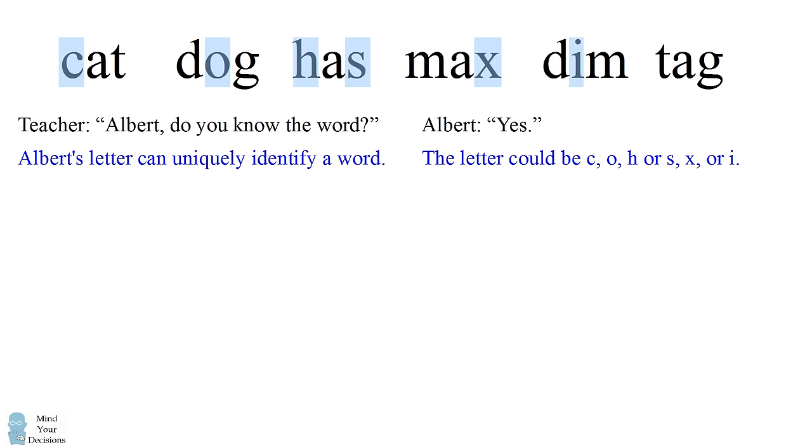Notice in the word tag, the letters T, A, and G all appear multiple times in this list. So since Albert replied that he could identify the word, that means he didn't have any of these letters. The word cannot be tag.